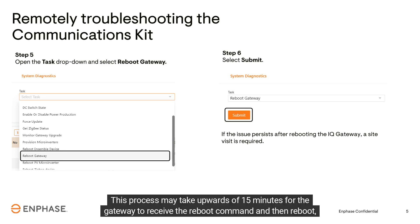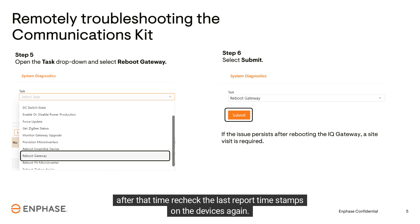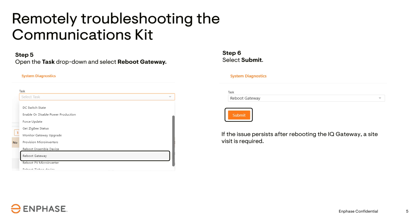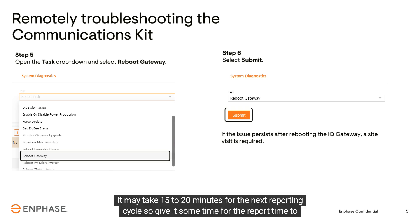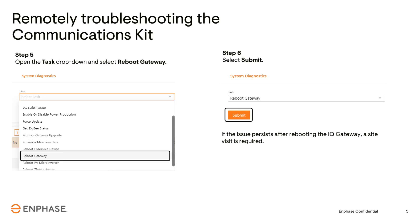This process may take upwards of 15 minutes for the gateway to receive the reboot command and then reboot. After that time, recheck the last report timestamps on the devices again. It may take 15 to 20 minutes for the next reporting cycle, so give it some time for the report time to be updated.